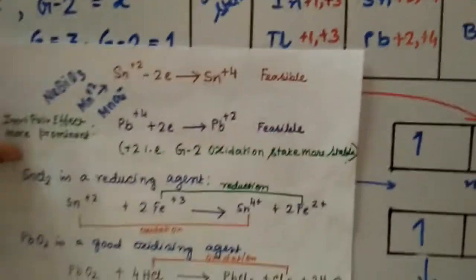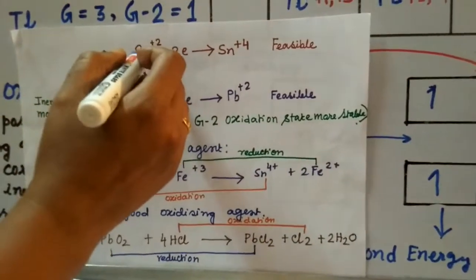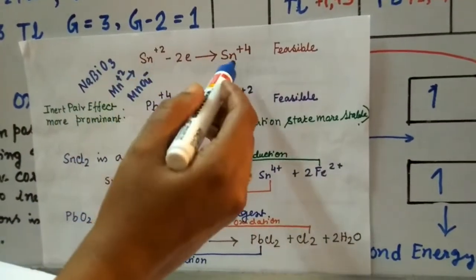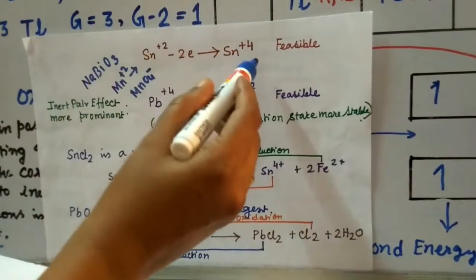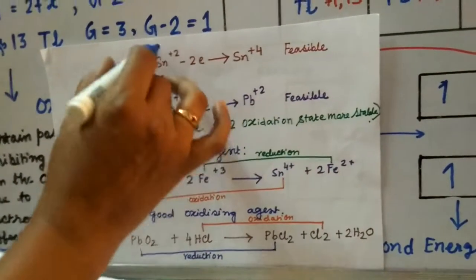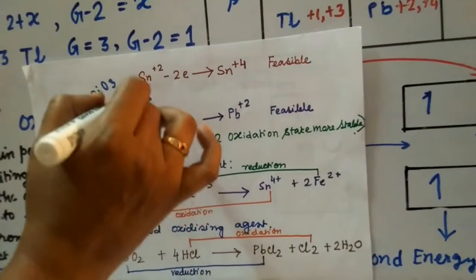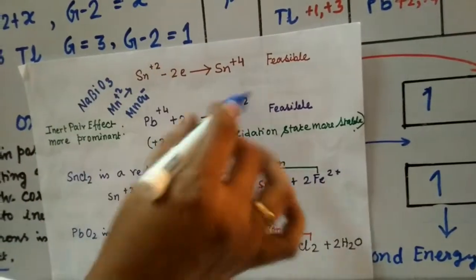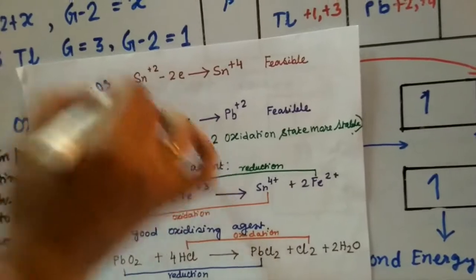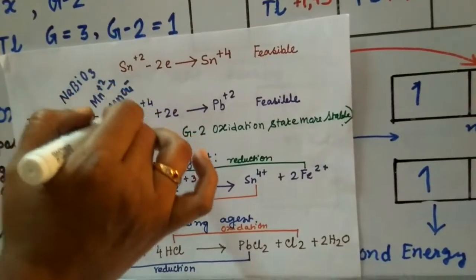Now let us look at some everyday examples of the inert pair effect. For tin, the +2 state gets oxidized to +4, which is a feasible reaction. But for lead — also in group 14 — the +4 state gets reduced to +2, which is the feasible reaction. This difference in chemical properties of these two elements is entirely because of the inert pair effect: lead is the heavier congener and is stable in the +2 oxidation state, while tin is not.